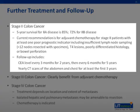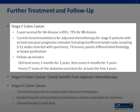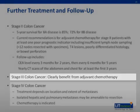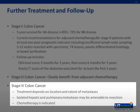Postoperative treatment of patients with stage 2 colon cancer is somewhat controversial. To date, no large randomized trial has shown a benefit from adjuvant chemotherapy for this rather heterogeneous group of patients. The 5-year survival rate of patients with stage 2A disease is 85%, compared with 72% for stage 2B disease, which is actually worse than for those patients with node-positive stage 3A disease. The American Society of Clinical Oncology currently suggests a course of adjuvant chemotherapy for stage 2 patients with at least one poor prognostic indicator, including insufficient lymph node sampling (meaning less than 12 nodes resected within the specimen), T4 lesions, poorly differentiated histology, or bowel perforation. Further follow-up of stage 2 patients includes a CEA level every three months for two years, then every six months for a total of five years, and yearly CT scans of the abdomen and chest for at least the first three years. Patients with stage 3 disease clearly benefit from adjuvant chemotherapy. The treatment of stage 4 patients depends on the location and extent of the metastases. Isolated hepatic or pulmonary lesions may be amenable to resection. Chemotherapy is indicated for these patients.